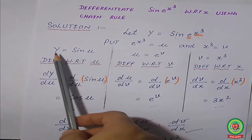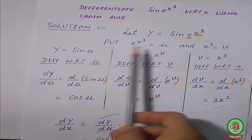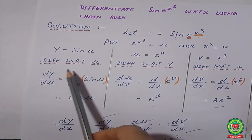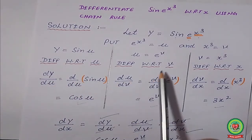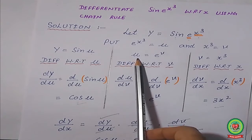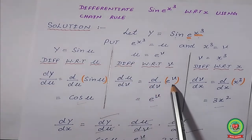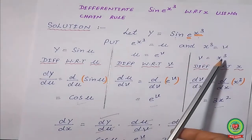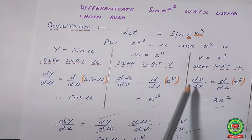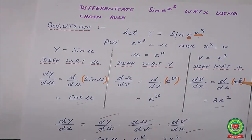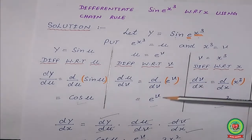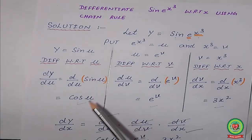With the substitution x³ = v, y = sin(u), and u = e^v, we now differentiate each part. dy/du = d/du of sin(u), which gives cos(u). Then du/dv = d/dv of e^v, which gives e^v. Then dv/dx = d/dx of x³, which gives 3x².